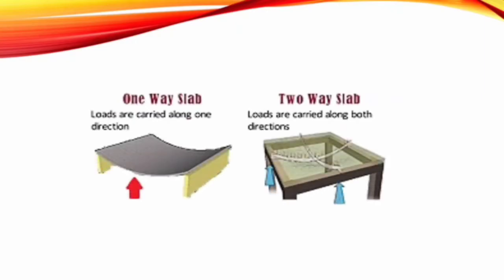Remember that a one-way slab is supported by beams on two opposite sides to carry the load along one direction. It will bend in one direction because it is supported on two opposite sides. The ratio of the longer span to the shorter span is equal to or greater than 2, and bending occurs in the direction along its shorter span.